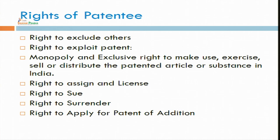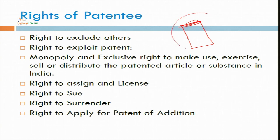To take an example from yesterday's lecture: the person who invented the ring pull can was the registered proprietor of that particular invention. Now he has the right to exclude the whole world from using that thing, unless those persons are taking a benefit arrangement from him. Now we can also see how you can transfer this patent to another person.